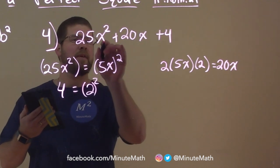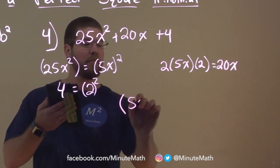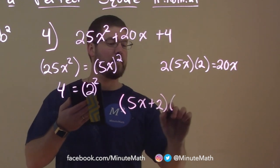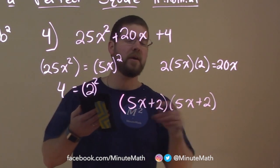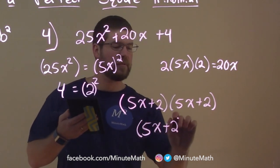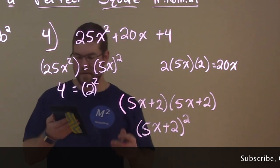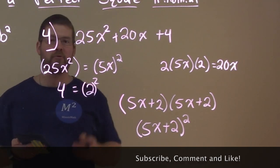We can see that 25x squared plus 20x plus 4 can be written as 5x plus 2 times, well, 5x plus 2, which is really 5x plus 2 all squared. And there we have our answer. We just very quickly factored a perfect square trinomial.